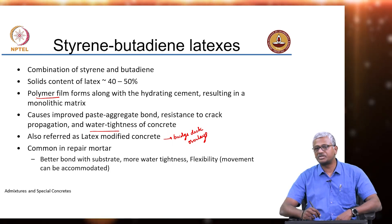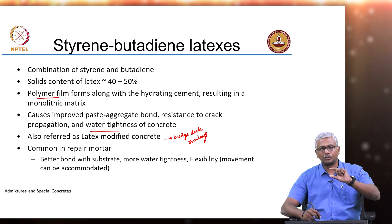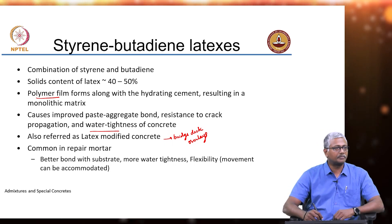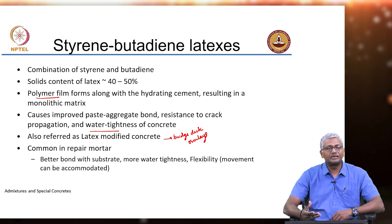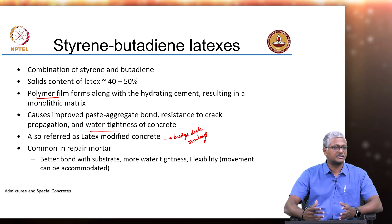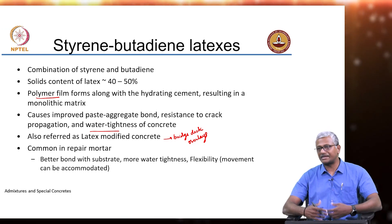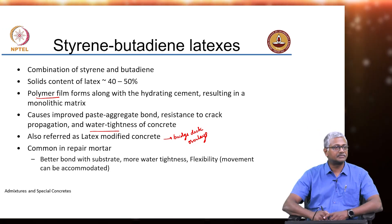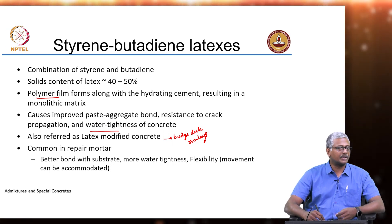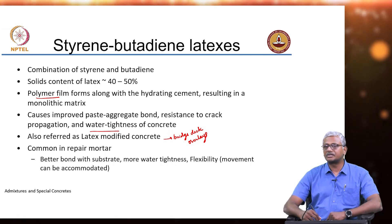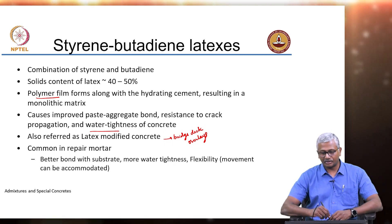In the deck slabs of bridge decks, on top you have an overlay — a thin overlay which can be added on the top to essentially impart some durability characteristics to your concrete. What you needed essentially was a system that is more impermeable to moisture, and moisture obviously carries other active ingredients that may affect the concrete. Because of that, you can introduce extra durability in your system by having an overlay that has latex-modified concrete.